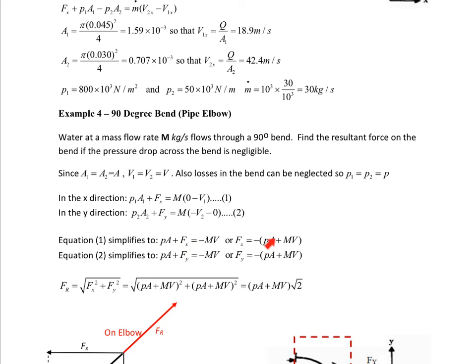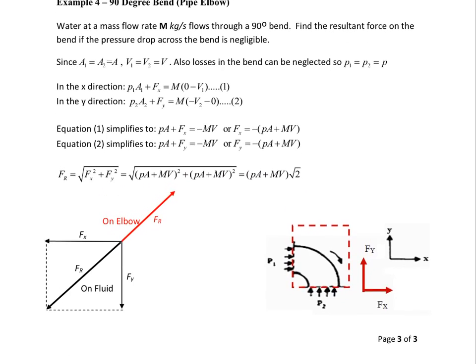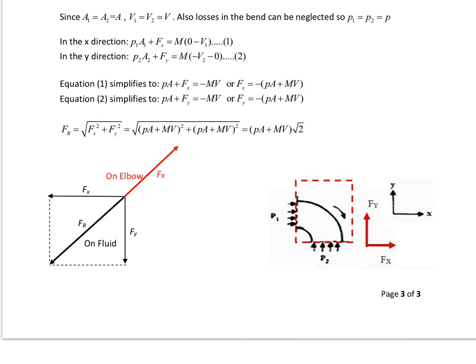And we simplify the equations and combine the equations to give you the resultant. Now, the interesting situation arises that if you notice the force in the x direction and in the y direction, fx and fy are equal. So the resultant, fr is given by this relationship depends on the pressure, the area, the mass flow rate and the velocity times the square root of 2.